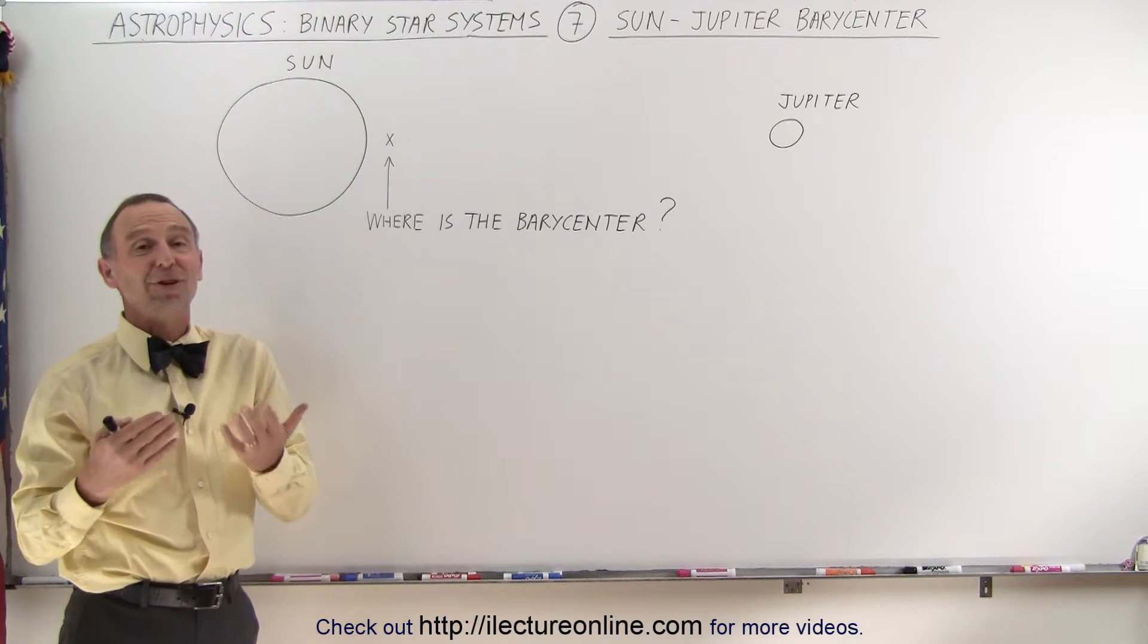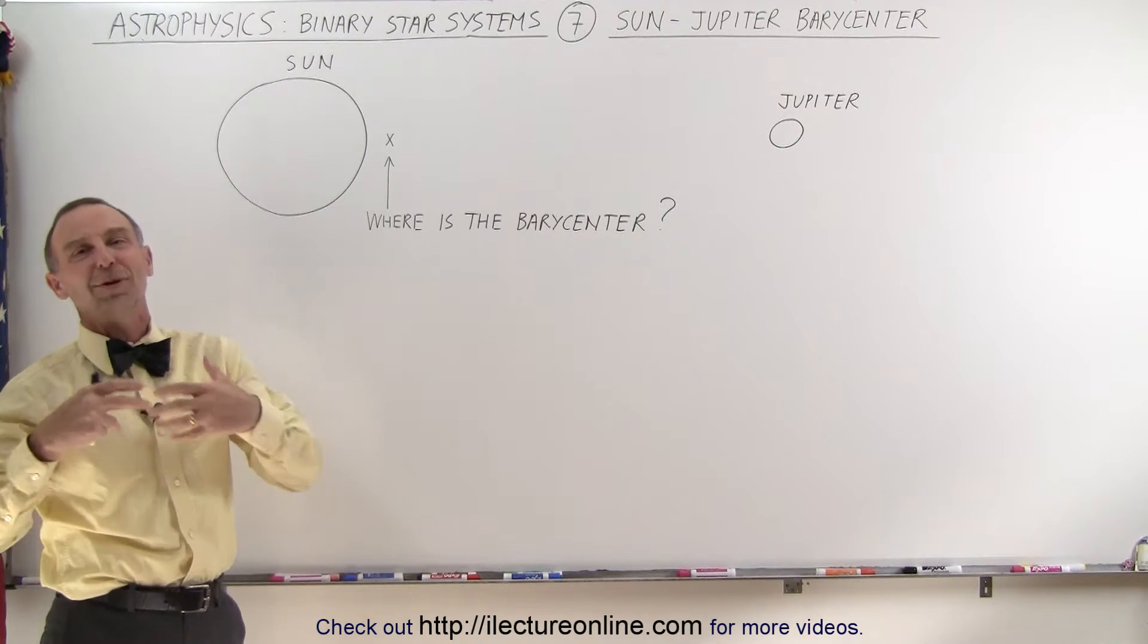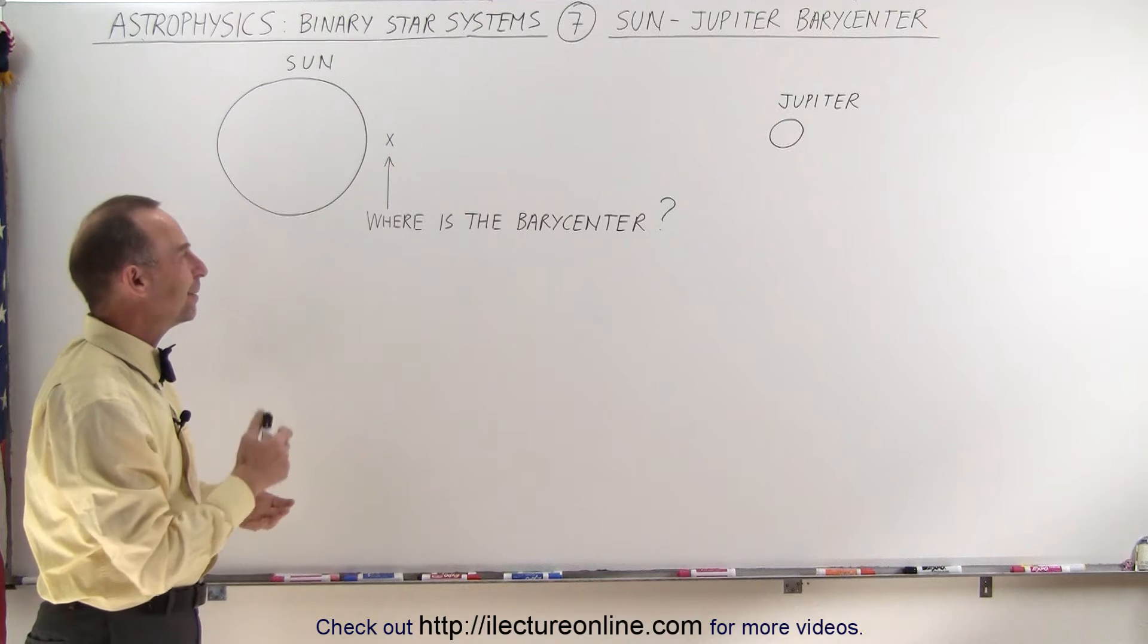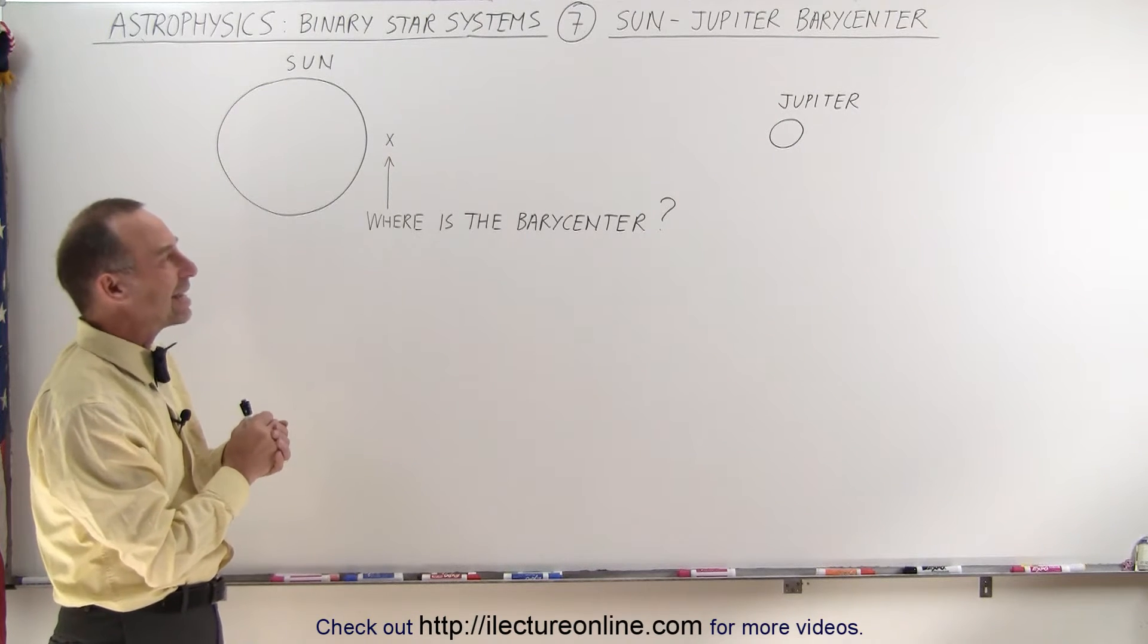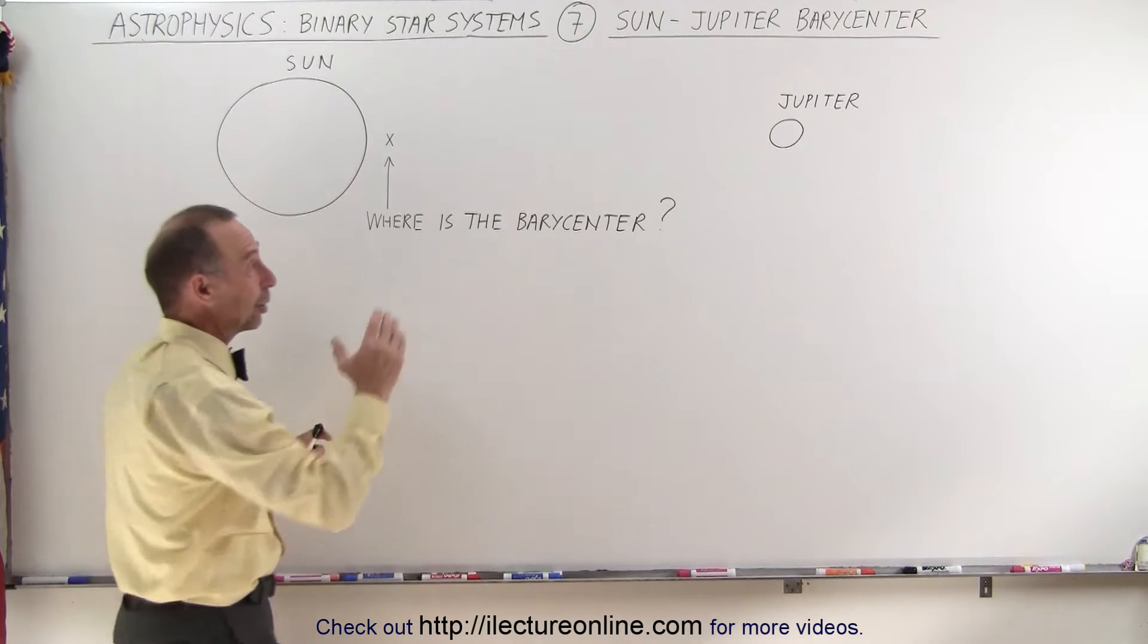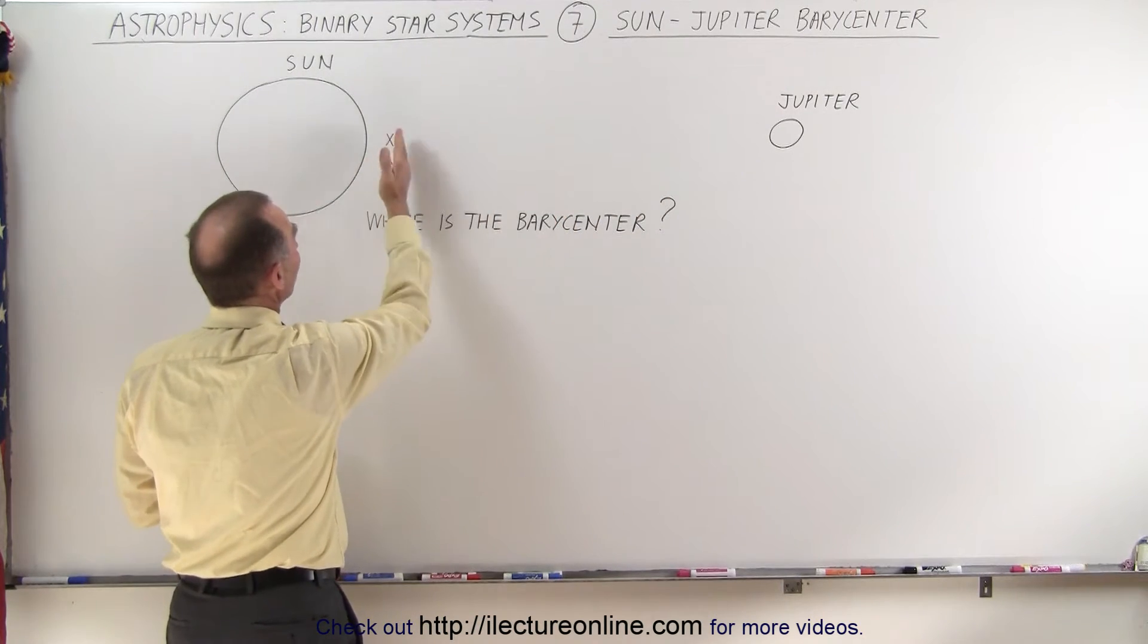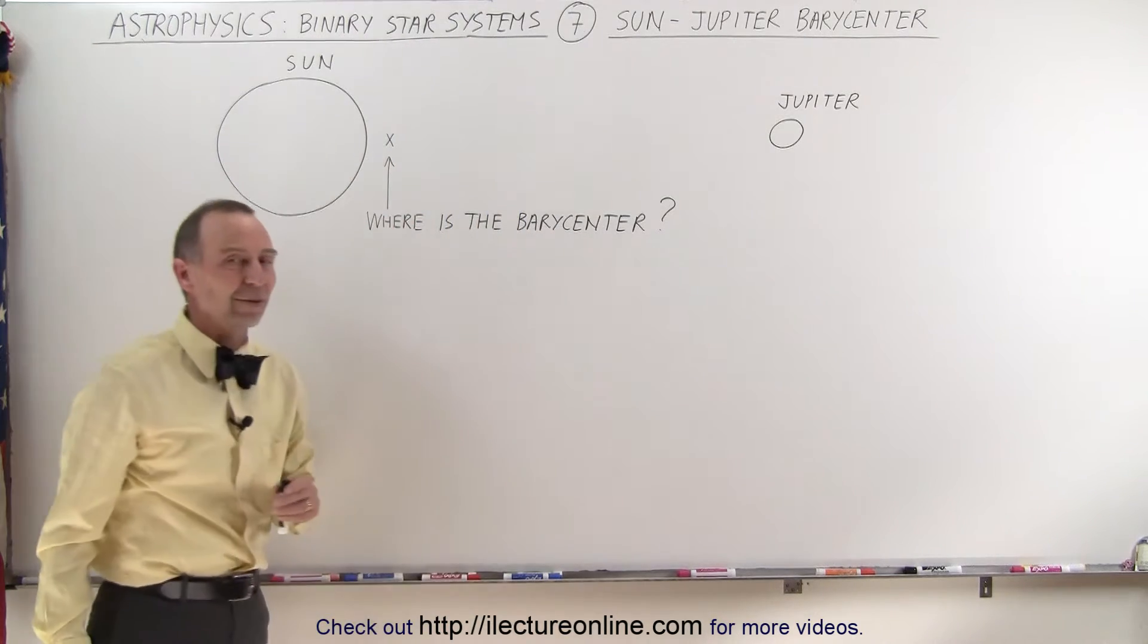Typically, most of the planets that we found using that technique are very large, because the larger the planet and the closer they are to the star, the easier it is to see the motion of the star. The farther the star will be from that barycenter.